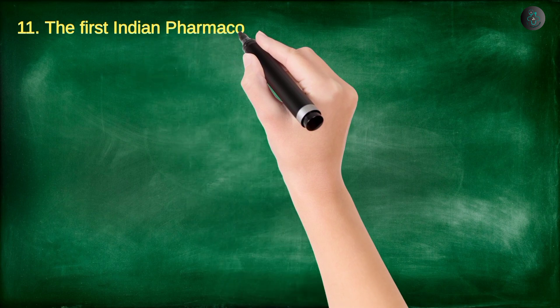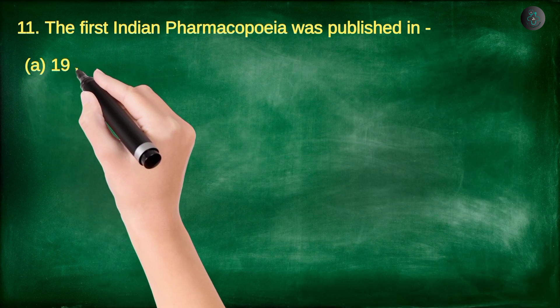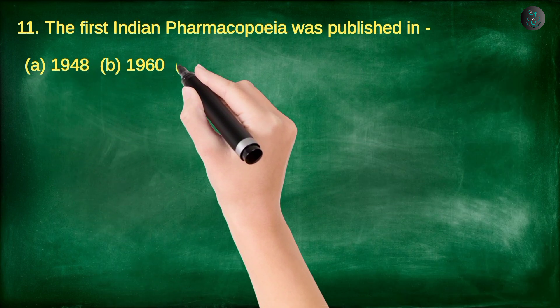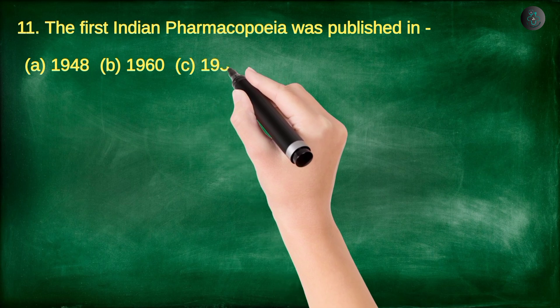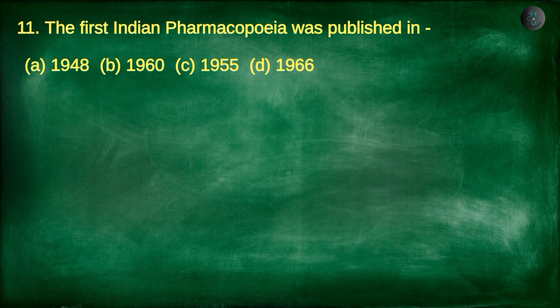Question number 11. The first Indian Pharmacopoeia was published in: A. 1948, B. 1960, C. 1955, D. 1966.